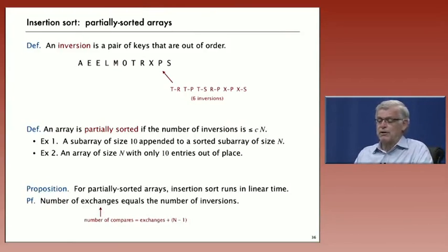And what's interesting about insertion sort is that it runs in linear time for partially sorted arrays. And the proof is the number of comparisons and the number of exchanges is equal to the number of inversions. Number of exchanges equal to the number of inversions. And then there's an extra compare for every element except the first.